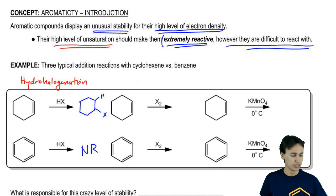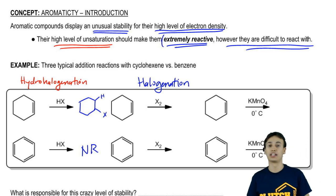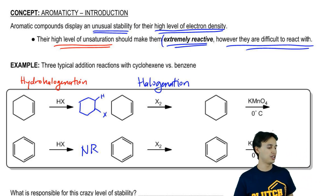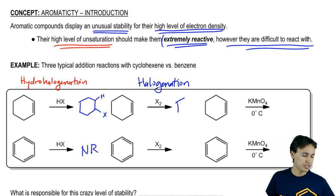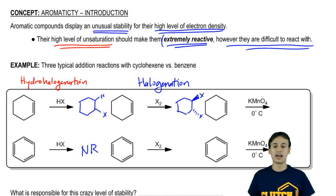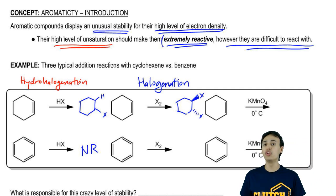This next reaction is called halogenation. This is another very common addition reaction. In halogenation, what we got was dihalides. We would actually get an anti-dihalide. If you look at a benzene ring, which by the way, I already said it a few times, but this is called a benzene ring. If you look at a benzene ring, it has three double bonds.